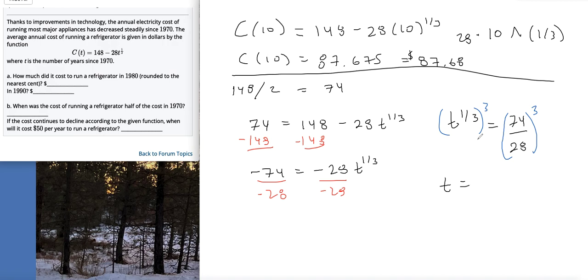For that I would just toss it in the calculator: 74 divided by 28, which is 2.64, and then raise that to the third. I'll let the calculator keep track of it for me. I got 18.459 years after 1970.